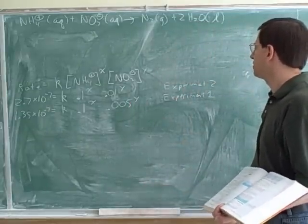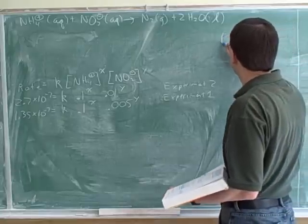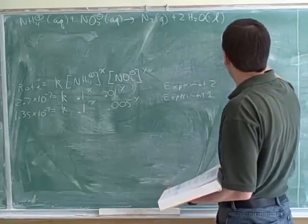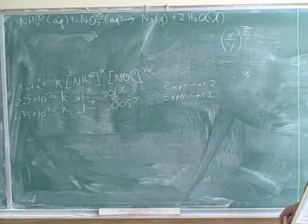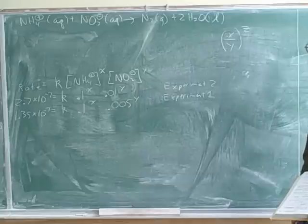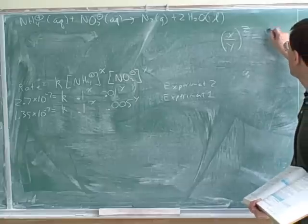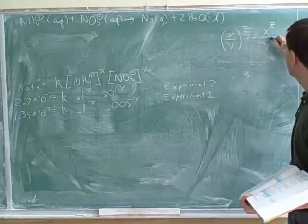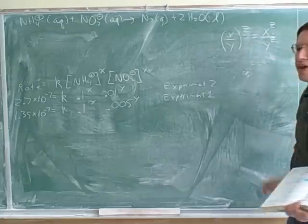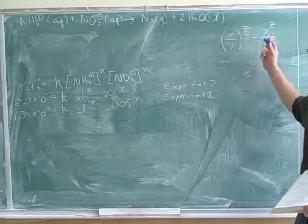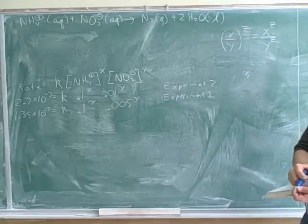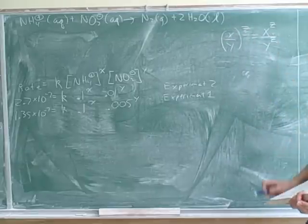Let's go over a little bit of math that we're going to need here. If you have (x/y) to the z power, you can rewrite that as x to the z over y to the z. That's a little bit of algebra we're going to need for these types of problems — these are two ways of writing the same thing.